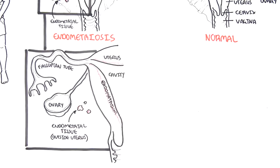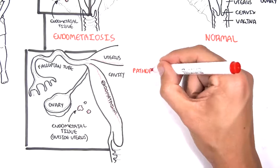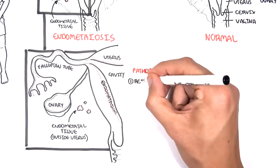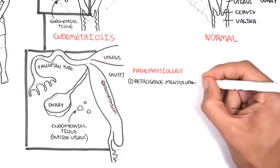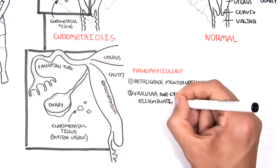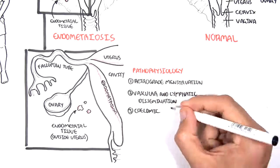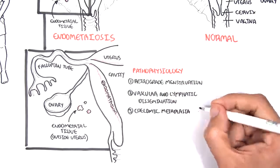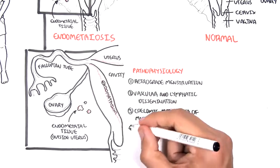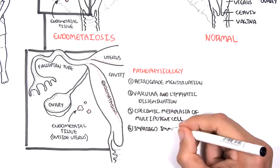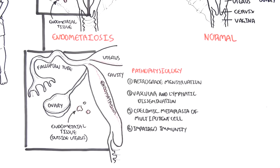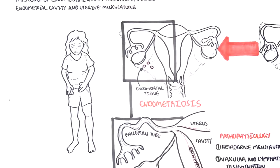The pathophysiology is not fully known, but there are a few theories. To put it simply, there are four: retrograde menstruation, vascular lymphatic dissemination, coelomic metaplasia of multipotent cells, or impaired immunity. We'll look more into each of these theories in the pathophysiology section later on.